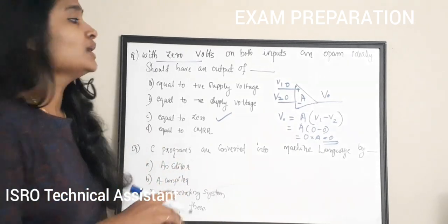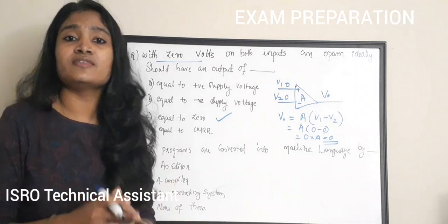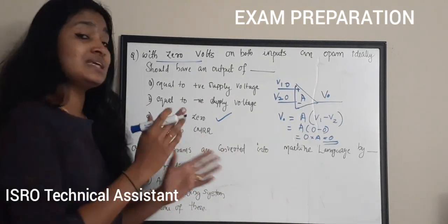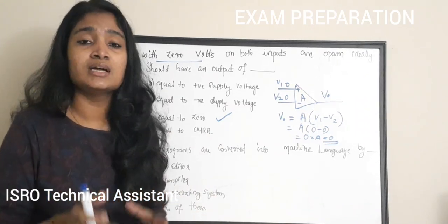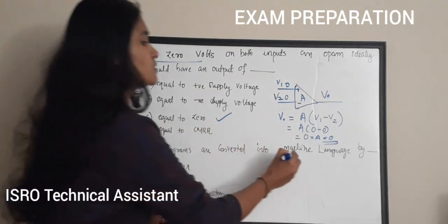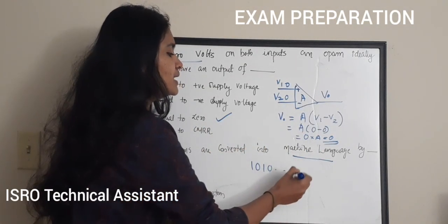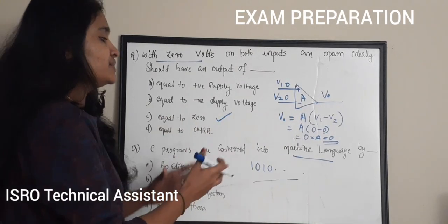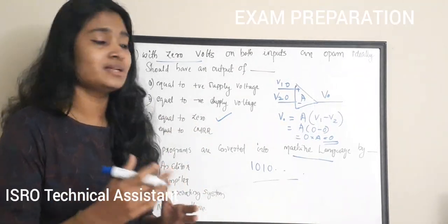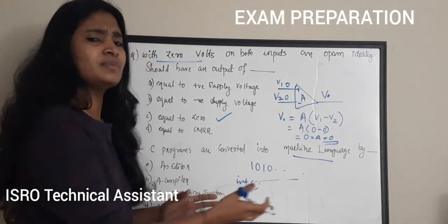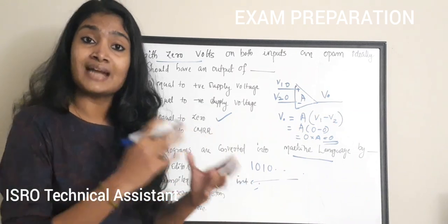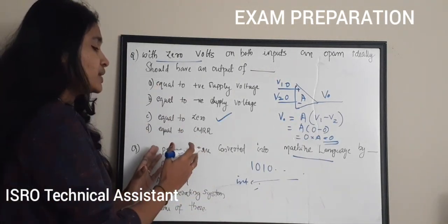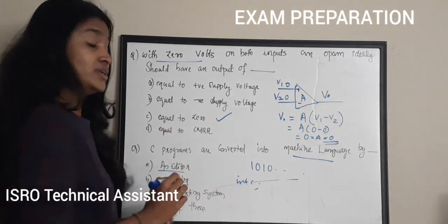In IDEs or integrated development environments, there is an editor, a compiler, debugger, etc. C programs are high-level languages, not in machine-understandable form. The machine-understandable language, called machine language, consists of ones and zeros. In order to convert this human-readable high-level language into machine-understandable form, we need a specific tool.